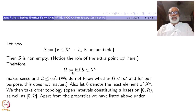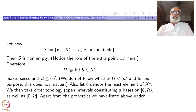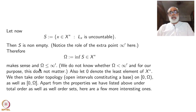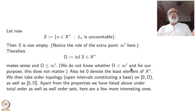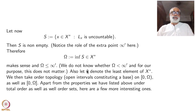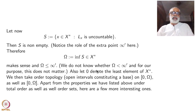Once S is non-empty, we can take its infimum in X*, because X* is well-ordered. Take the least element and call it Ω (capital omega). This makes sense because S is non-empty. This Ω is automatically a member of S, so L(Ω) is uncountable, and Ω ≤ x_∞. Whether Ω equals x_∞ or is strictly less depends on X itself, but we are not concerned about that.